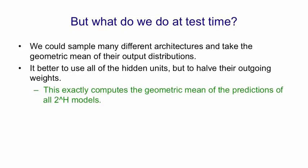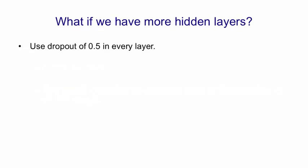It turns out that using all of the hidden units with half their outgoing weights exactly computes the geometric mean of the predictions that all 2 to the H models would have used, provided we're using a softmax output group.